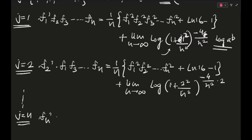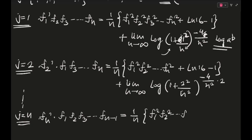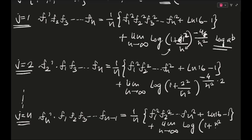For J=N it will be FN'·F1·F2·F3·...·F(N−1) = (1/N)·(F1²·F2²·...·FN²) + ln16 − 1 + limit N→∞ of log(1 + N²/N²)^(−4/(N²·N)) — don't cancel N²/N² right now. This last exponent is −4N/N², which I hope you can see, though it became a little unclear.